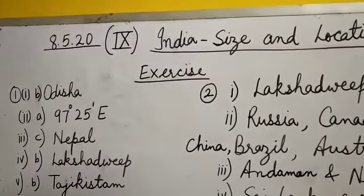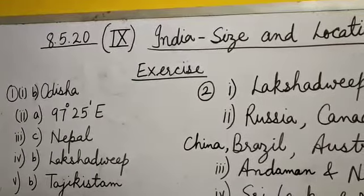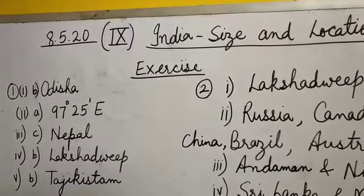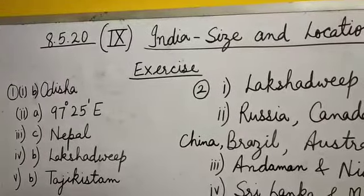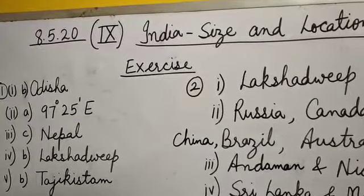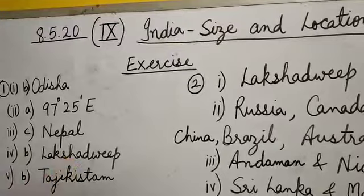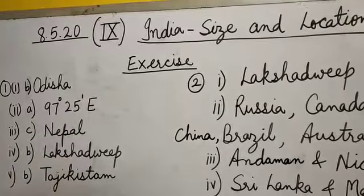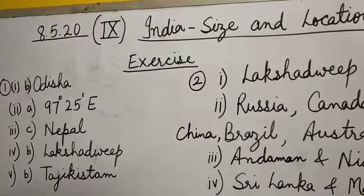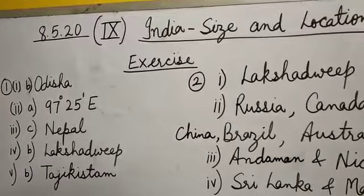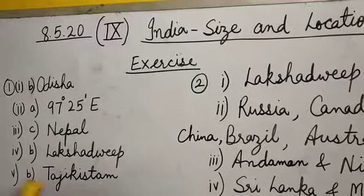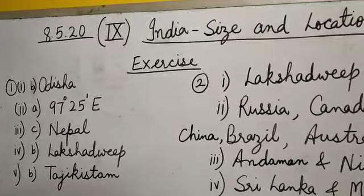Number four: If you intend to visit Kavaratti during your summer vacations, which union territory of India will you be going to? The correct answer is B, Lakshadweep. Lakshadweep's capital is Kavaratti. Number five: My friend hails from a country which does not share a land boundary with India — identify the country. The answer is B, Tajikistan.